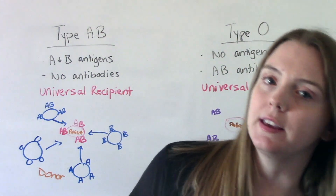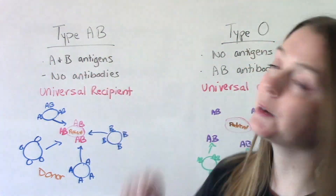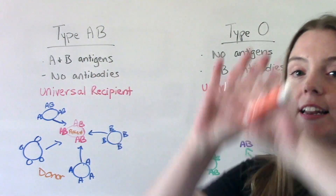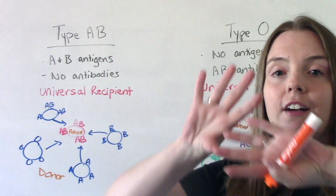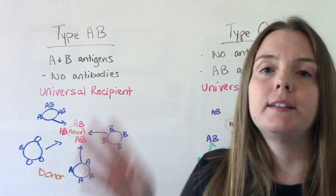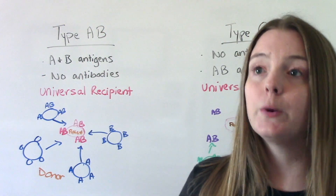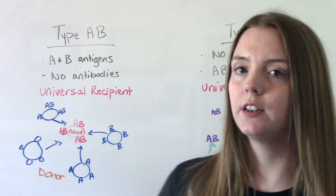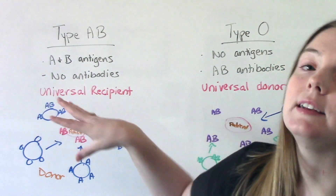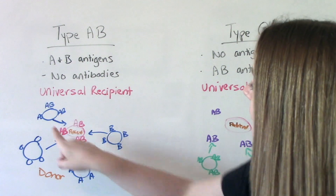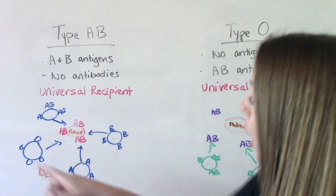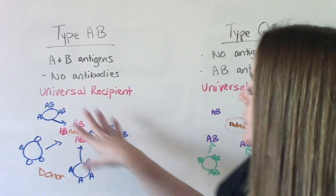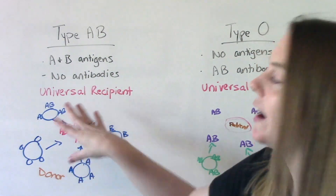Type AB means you have both A and B antigens on your red blood cells. What's special about them is they don't have any antibodies, so there's nothing trying to regulate what can be attached to them. That makes them a universal recipient. Because there are no antibodies blocking other blood types, you can give them A, B, O, and AB — all the different blood types, because nothing is going to reject them.